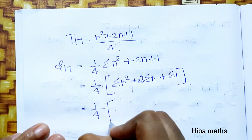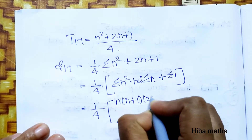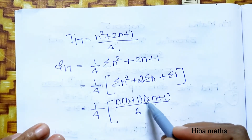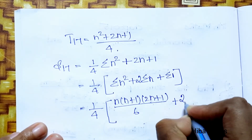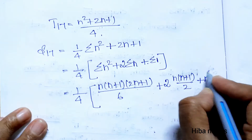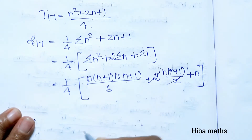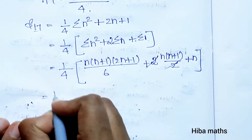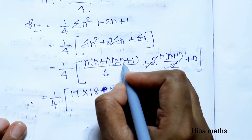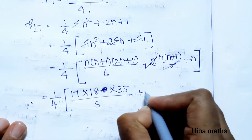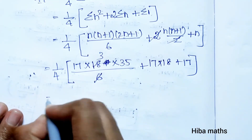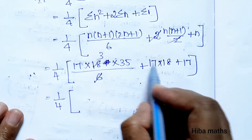S of 17 = (1/4) × [summation of n² + 2 × summation of n + summation of 1]. Substituting standard formulas: sum of n² = n(n+1)(2n+1)/6, sum of n = n(n+1)/2, and sum of 1 = n. Substituting n=17: (1/4) × [17×18×35/6 + 17×18 + 17].